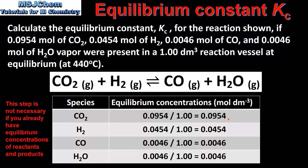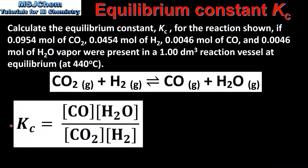So here we have the equilibrium concentrations of the carbon dioxide, hydrogen, carbon monoxide and water vapor. Next we write an equilibrium constant expression for the reaction. In the numerator we have the carbon monoxide and water vapor, and in the denominator we have the carbon dioxide and hydrogen.